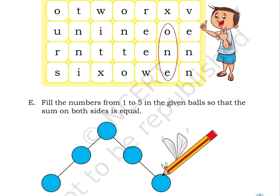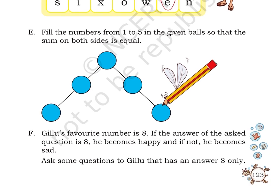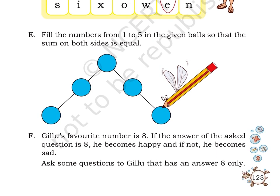Puzzle E: Fill numbers from 1 to 5 in these balls so that the sum on both sides is equal. There is a ball at the center. On the left side, diagonally, there are two more balls attached to it. Similarly, on the right side, diagonally, there are two more balls attached to it.